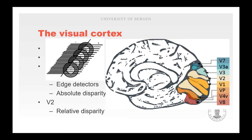The primary visual cortex, also known as V1, receives input from the LGN, and here the on-off patterns of the retinal ganglion cells are essential in creating edge detectors. These can be visualized as four ganglion receptive fields overlapping, and when a specific angle has all four cells stimulated at the same time, the visual cortex detects light at that specific angle. There are several types of edge-detecting neurons in all angles all over the visual field, and these are essential in object and scene construction.